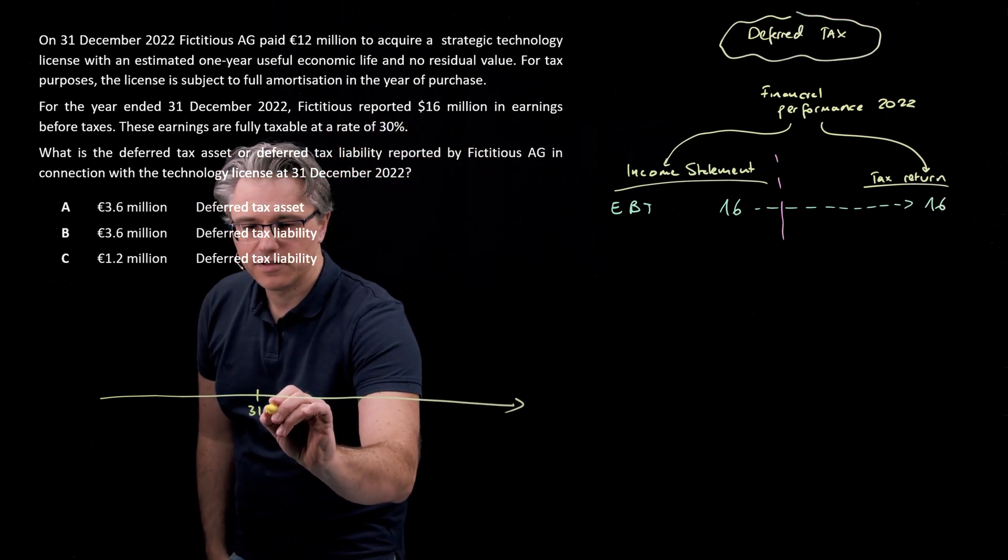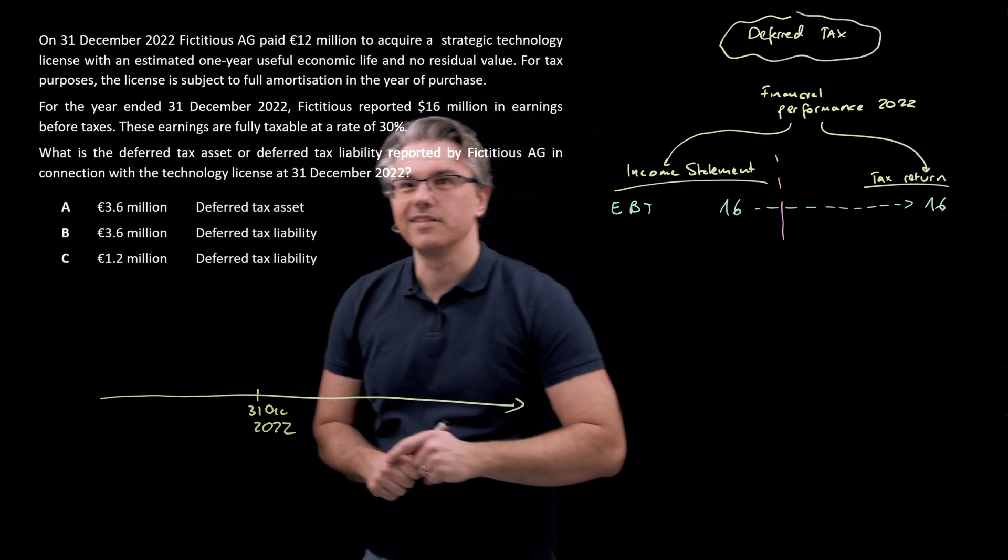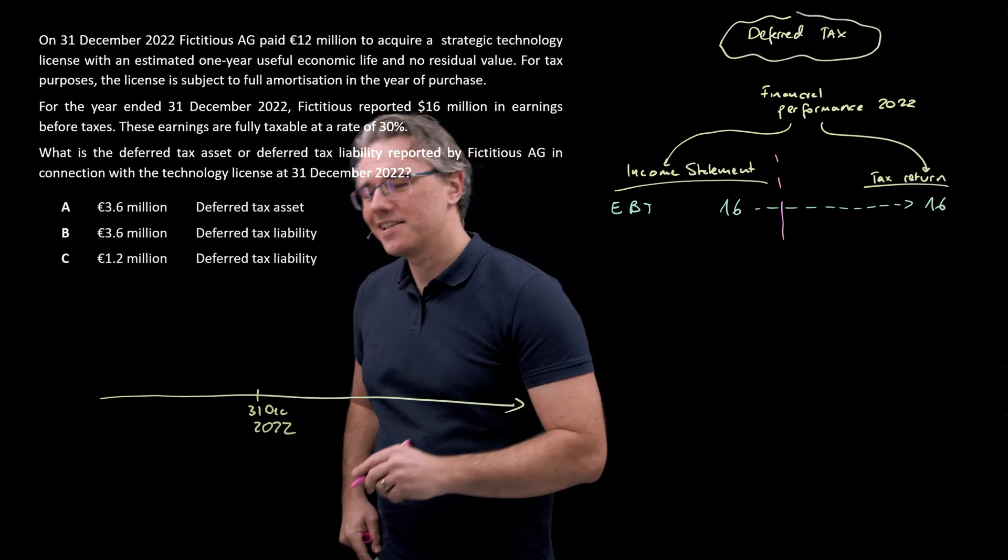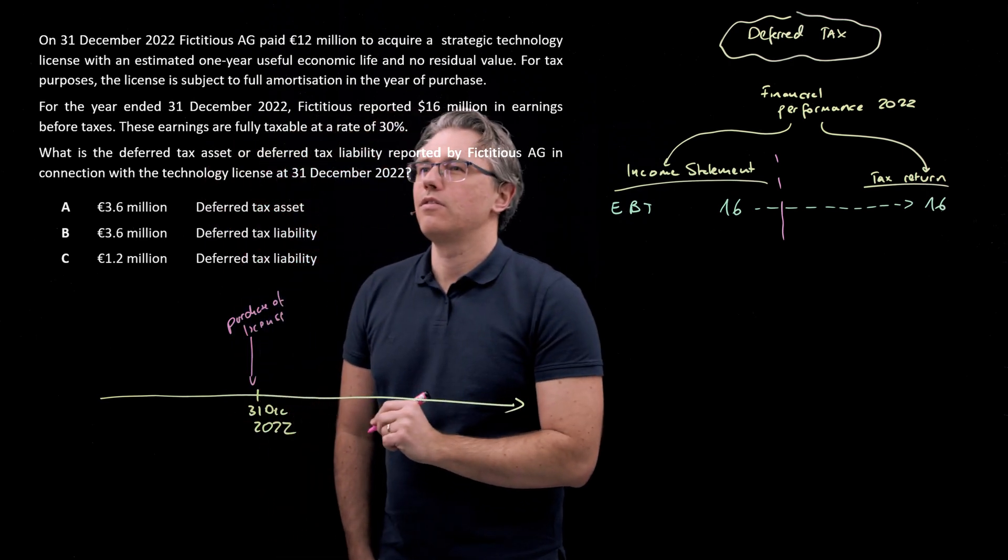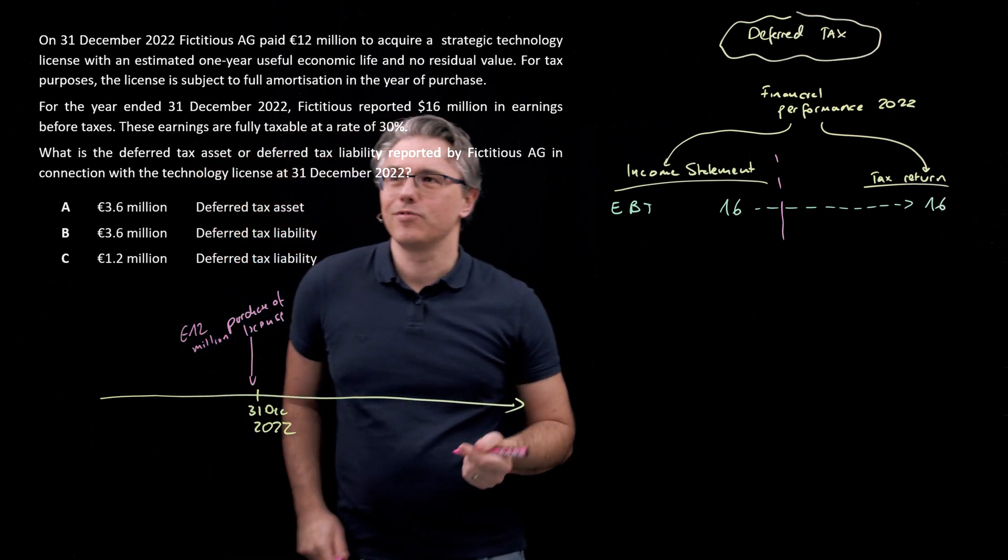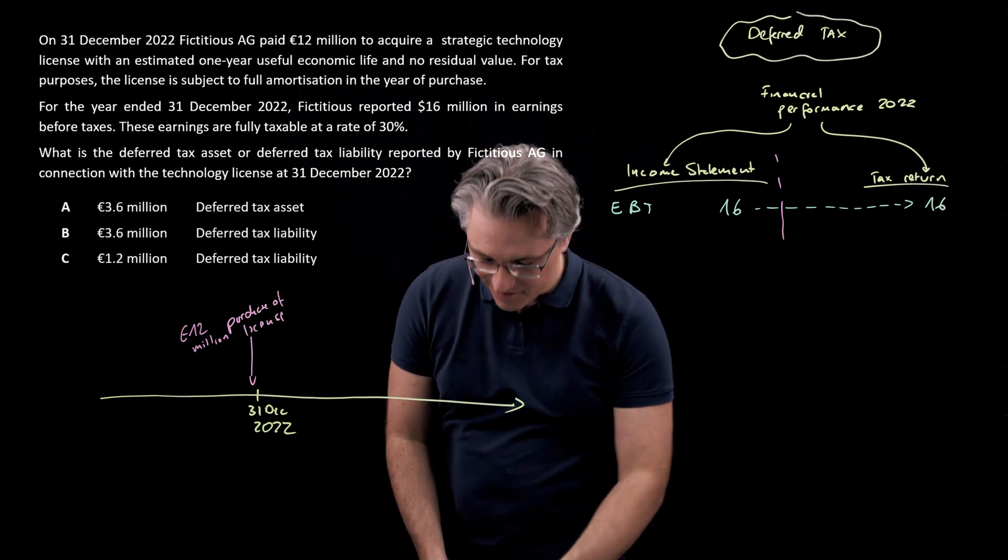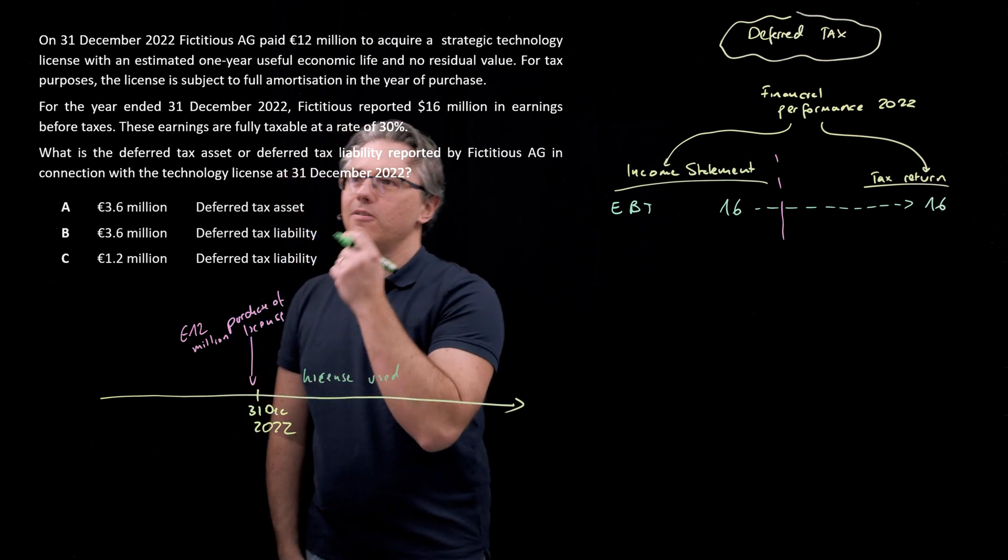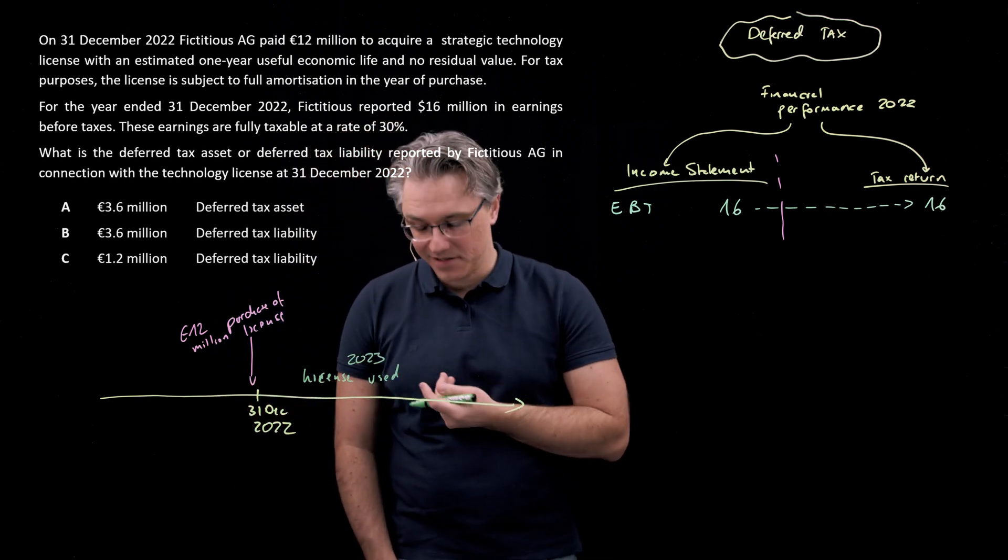The reality of this scenario is such that here we've got the 31st of December 2022, and the acquisition of the technology license is that we make the acquisition here at a cost of 12 million euro. And even though the license isn't really used much on the 31st of December, it's actually going to be used in the next year because we're told it has an estimated one year useful economic life. So over here, 2023, that's when the company will be getting the benefits of it.